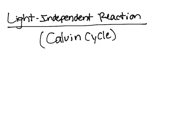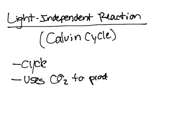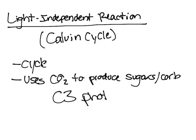Light-independent reactions are more commonly known as the Calvin cycle. Overall, this is essentially a cycle - a cyclic series of reactions that uses carbon dioxide to produce sugars or carbs, which are essentially the same thing. This is commonly known as C3 photosynthesis.